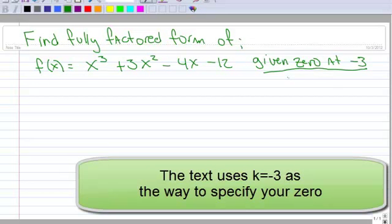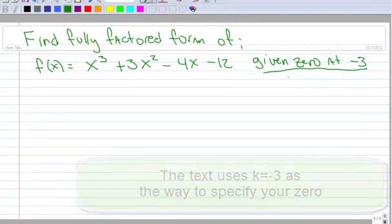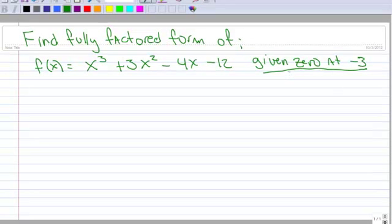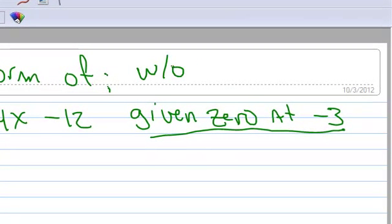And that means just pretend like somebody else has already graphed or done something else to find that you have a zero at negative 3. So that means if you were to graph it, one of your x-intercepts is at negative 3. So we're going to do this without graphing.